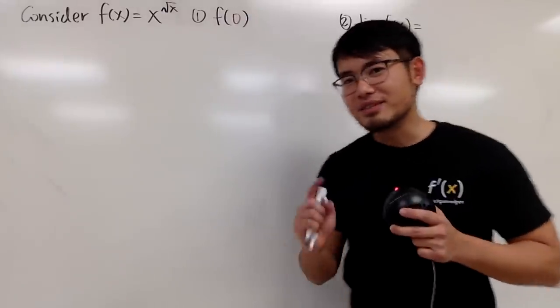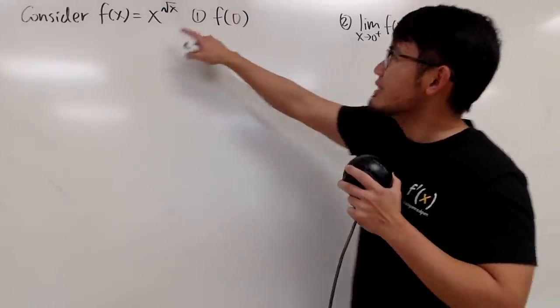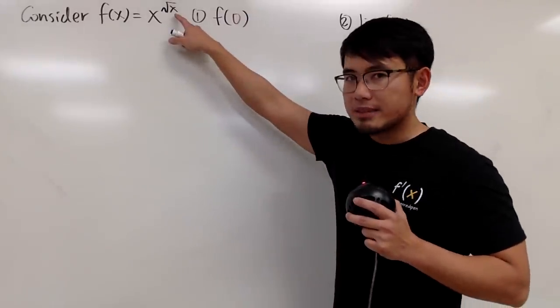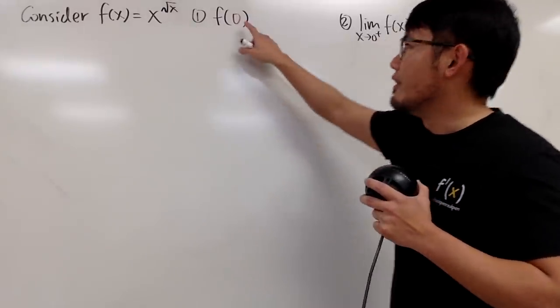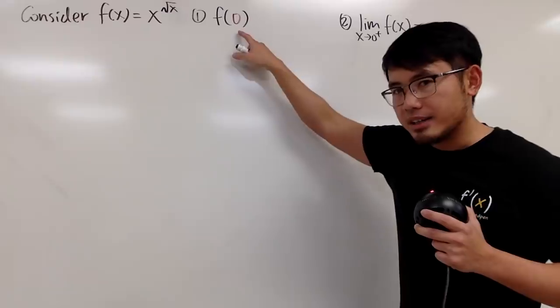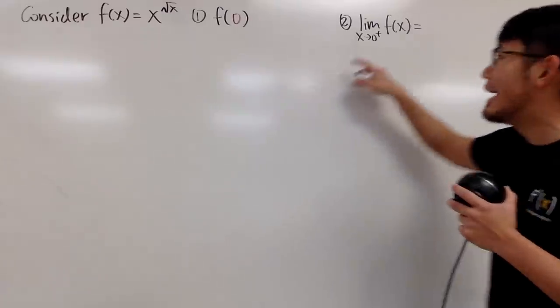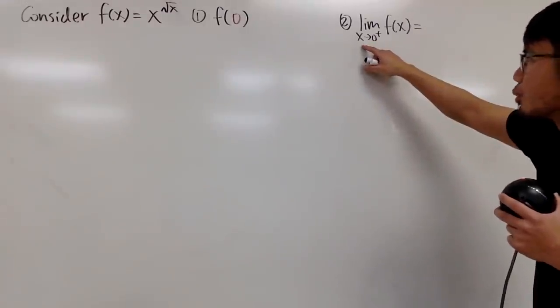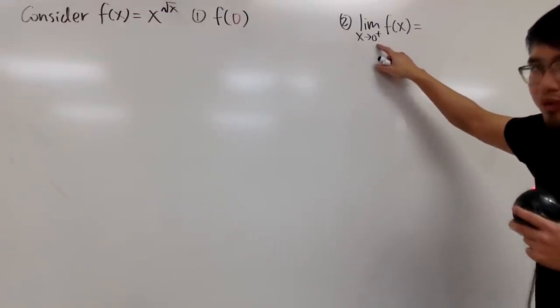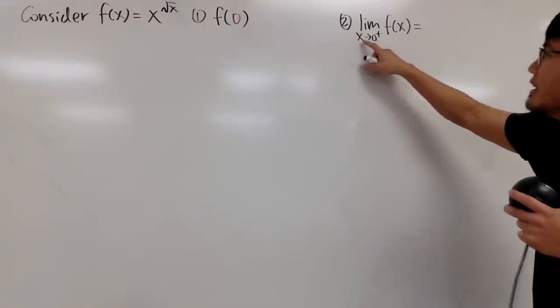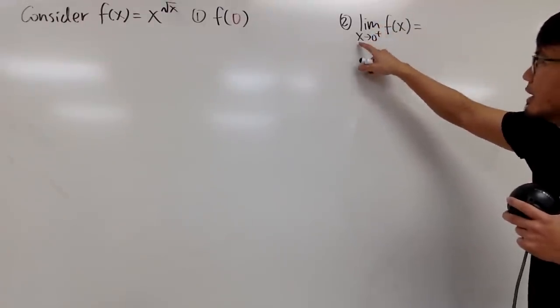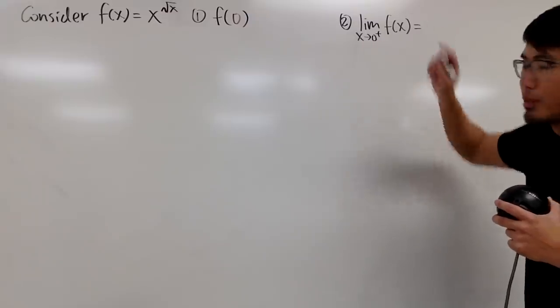In this video, let's focus on x to the square root of x power when x is exactly equal to 0, and when x is approaching 0 from the right-hand side — namely, we take the limit as x approaching 0 plus.